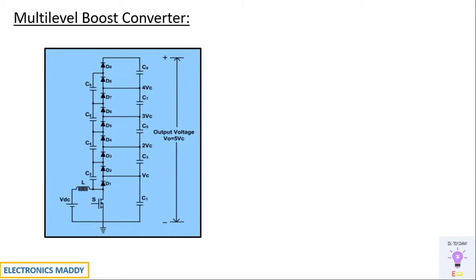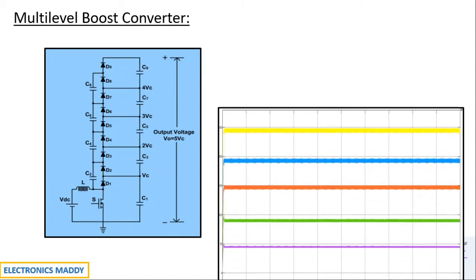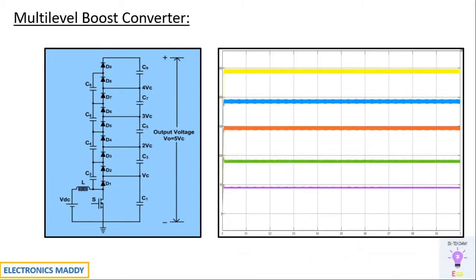So what is the expected nature of the output voltage waveform? This is the nature of the output voltage — Level 1, Level 2, Level 3, Level 4, Level 5 — all of these are DC voltages if you carefully observe. However, the ripple is quite high. I will be using a higher value of capacitance to reduce the ripple, which I'll be demonstrating in this video.